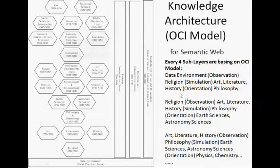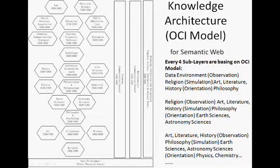For example: data, religion, art, philosophy. Making religion as the physical layer, art will be the theory layer, philosophy will be the application layer, and sense will be the orientation layer, and so on.